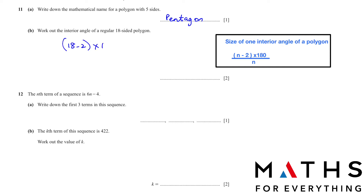Write all the formulas down on one paper at the end of your book, or somewhere where you can easily go through them. The answer is 160 degrees.